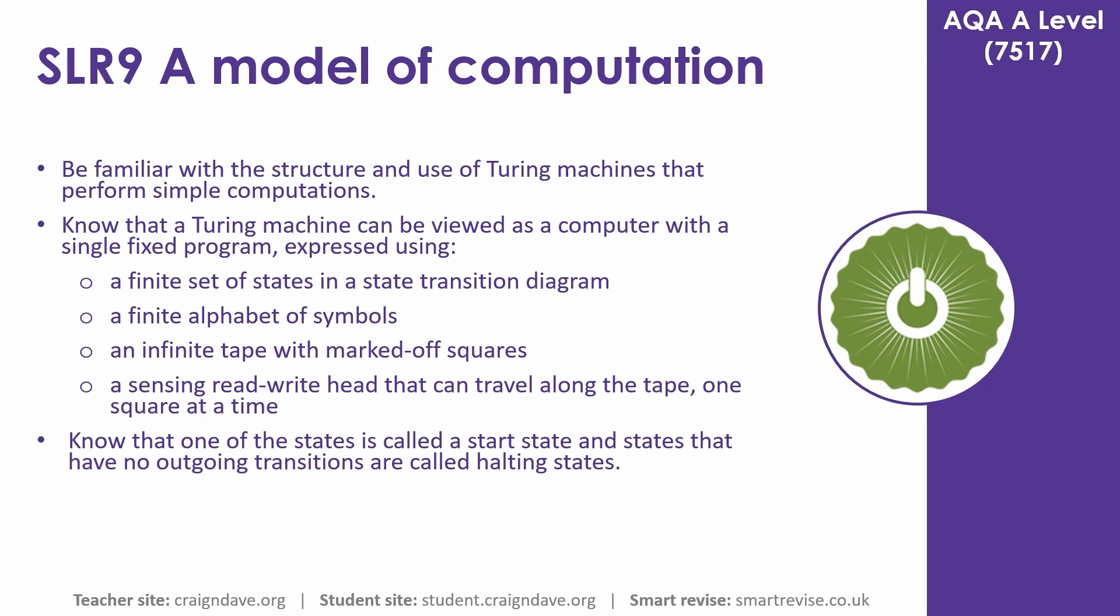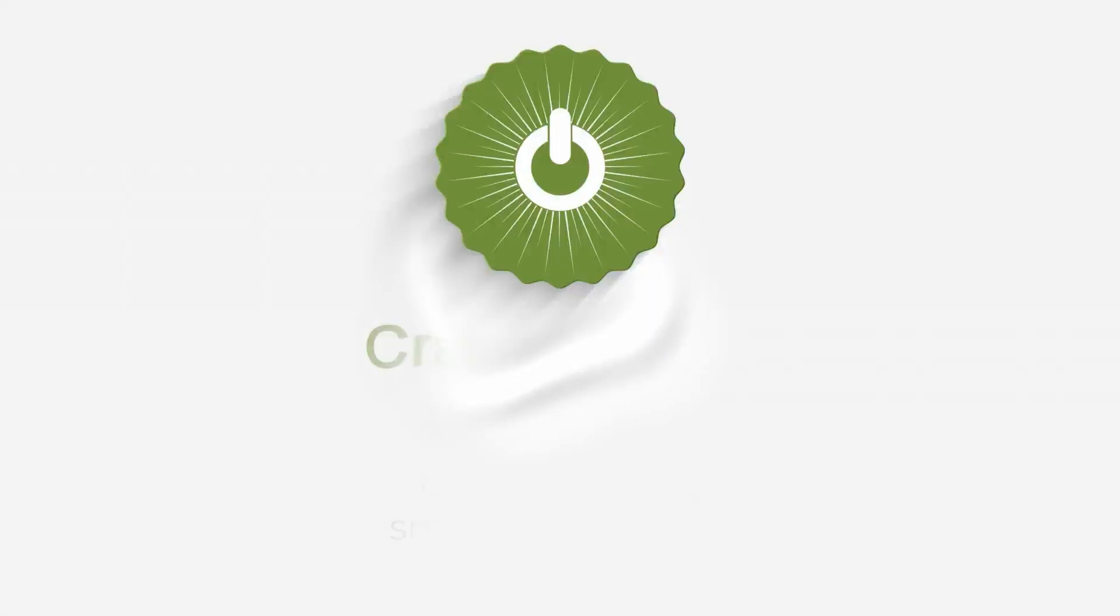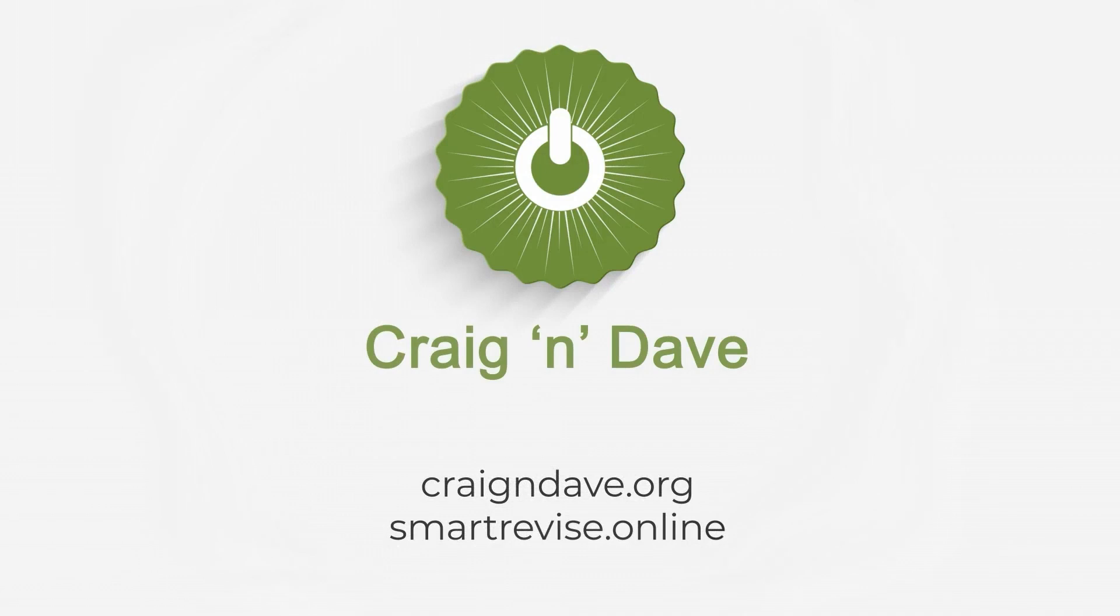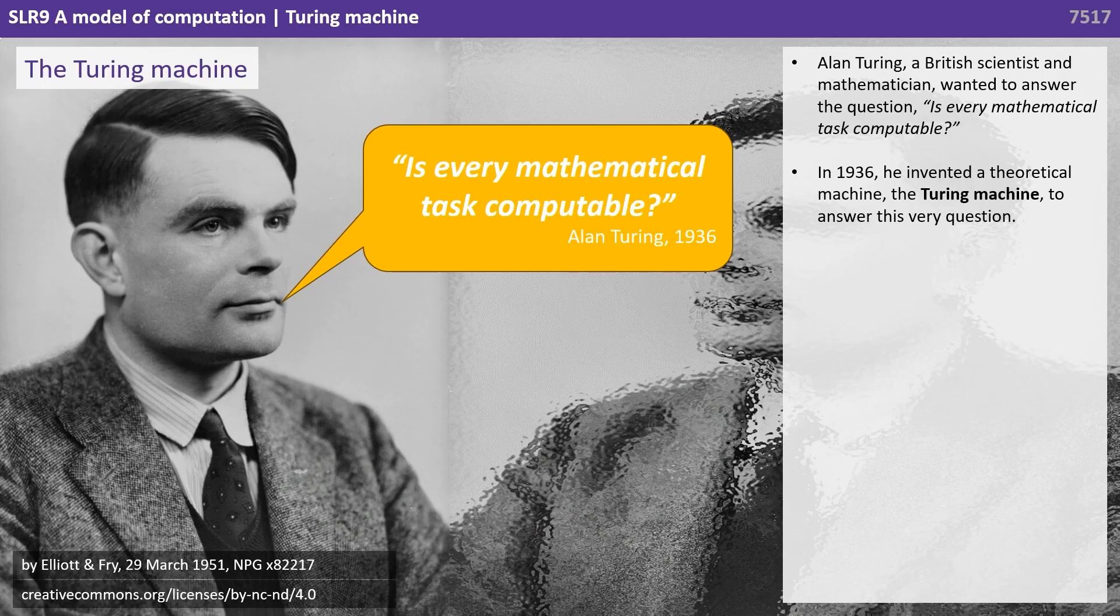In this video we become familiar with the structure and use of Turing machines that perform simple computations. Alan Turing, a British scientist and mathematician, wanted to answer the question: is every mathematical task computable? In 1936 he invented a theoretical machine, the Turing machine, to answer this very question.